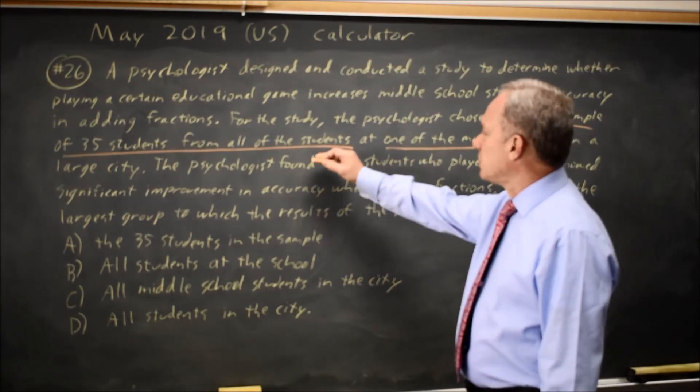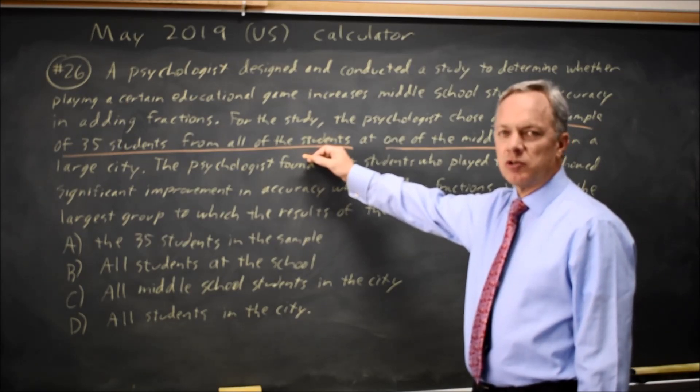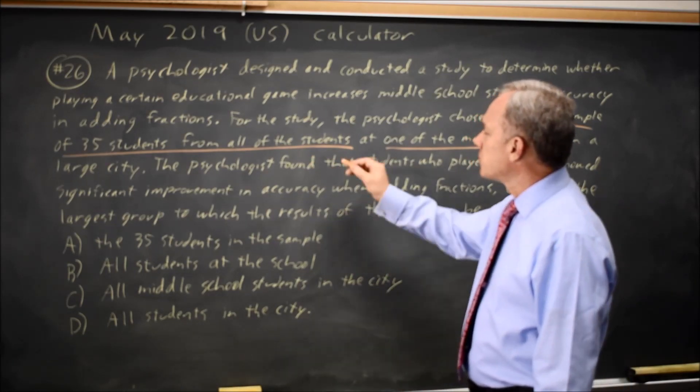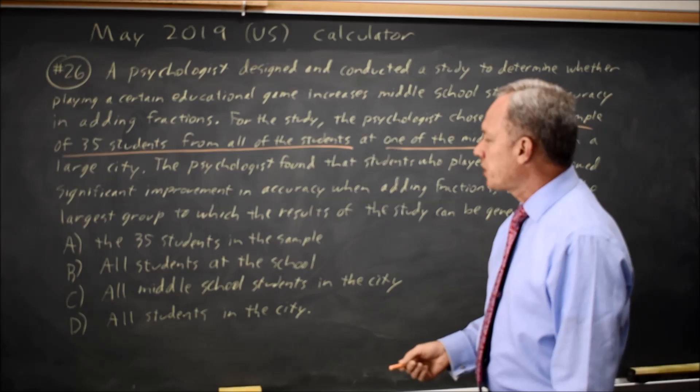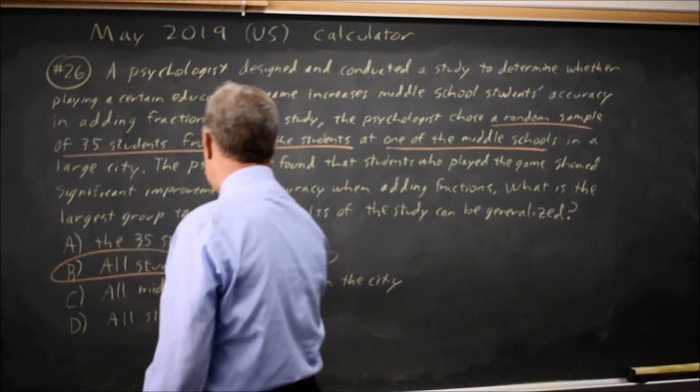The rule is the results of a study can be generalized to the group from which participants were randomly selected. So since we randomly selected participants from all students at one middle school, we can generalize to all students at that school.